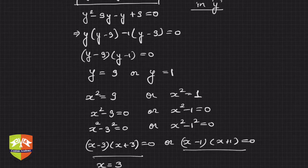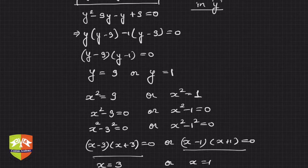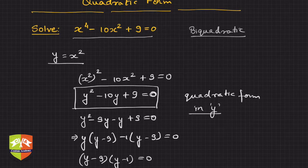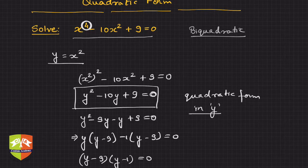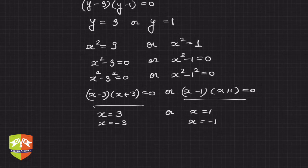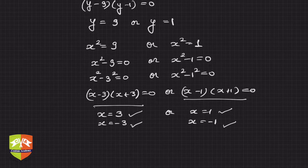So the solutions are x equals 3, x equals minus 3, x equals 1, or x equals minus 1 — four roots in total. This makes sense because the initial equation was degree 4, so it was expected to have four solutions. Similarly, let me take another equation: 25a to the power 4 divided by x squared plus x squared equals 26a squared.